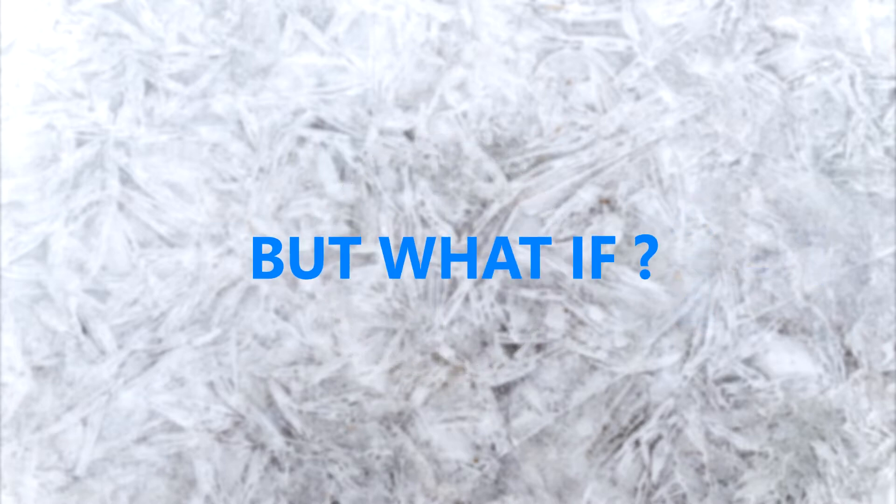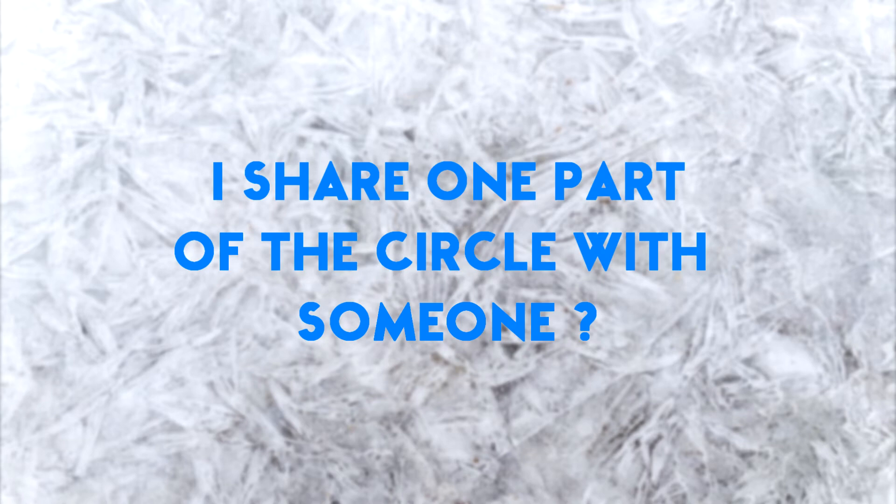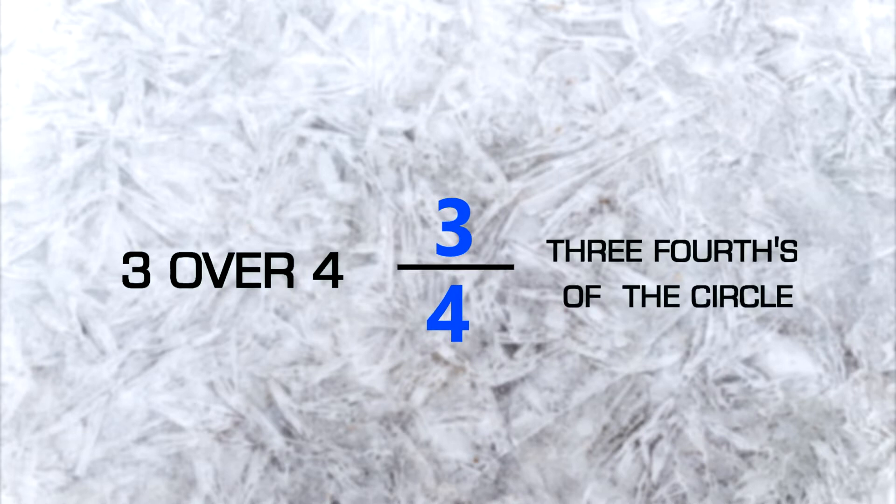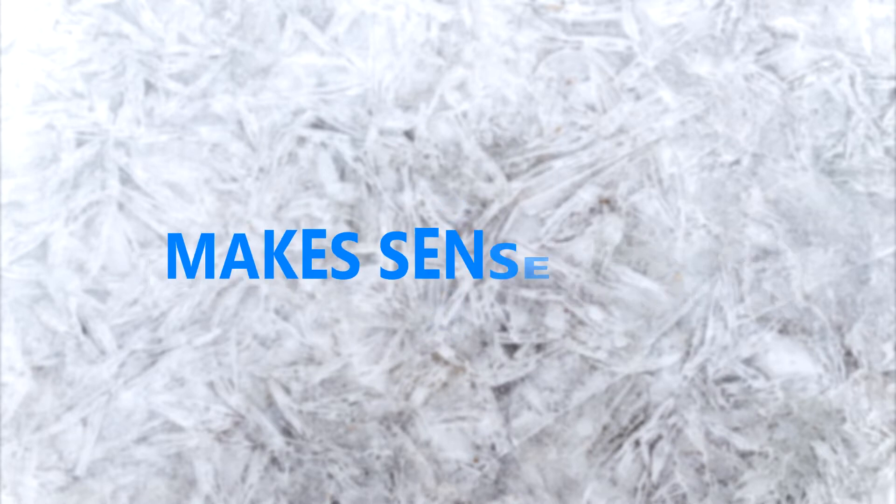But what if I share one part of the circle with someone? Well, the circle is still divided into 4 equal parts, so the bottom number would still be 4. But I only have 3 of them, of those 4 parts left. So the top number would change into 3. So I have 3 over 4 or I can call this as 3 fourths of the circle. Make sense, right?